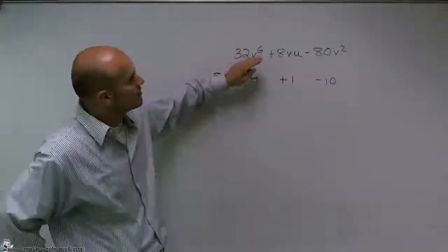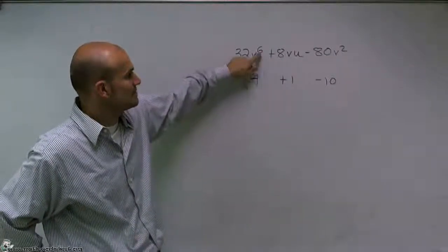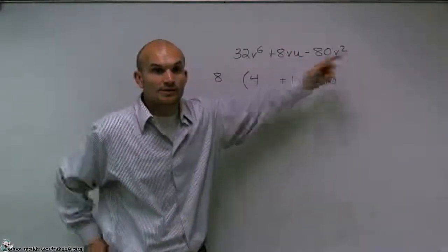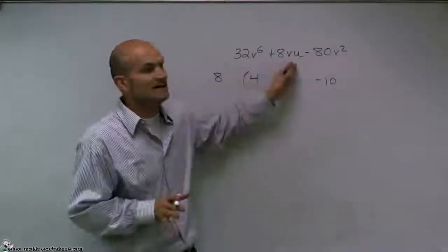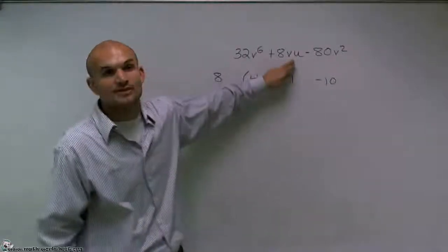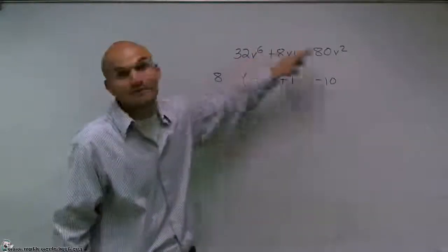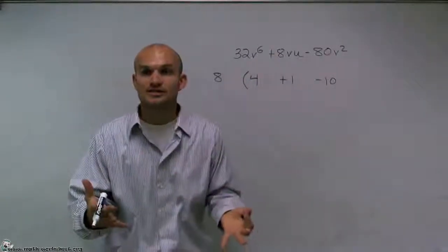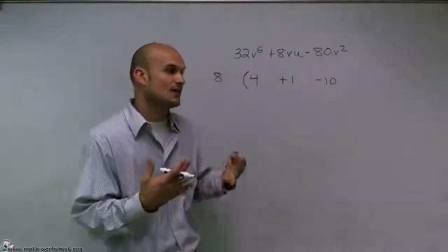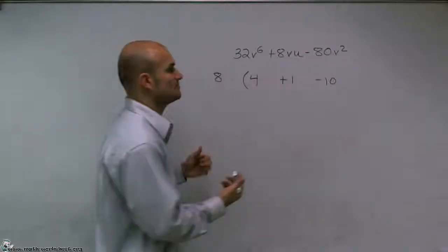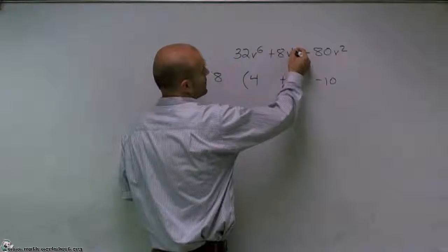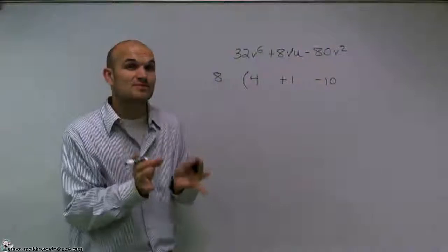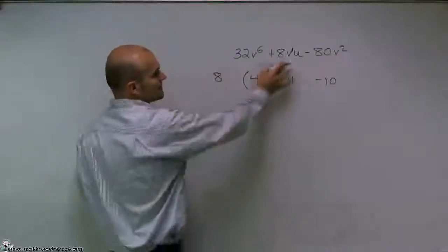So here, I look at what variable do they all share. Here has a V to the sixth. Here I have a V and a U. And here has a V squared. Since they all share a V, I know I can factor out a V. This is the only term that has a U, so I cannot factor a U out of the other two terms. So I need to determine what is the largest term of V that I can factor out. And we're going to look at what is the smallest exponent. What I notice is V is just V to the first. So that's going to be the smallest number I can factor out of these terms.